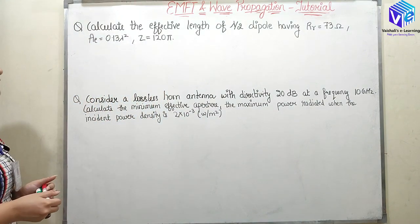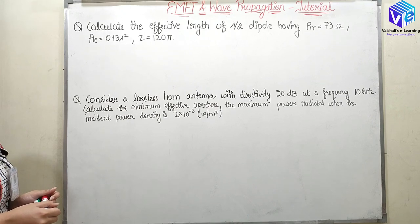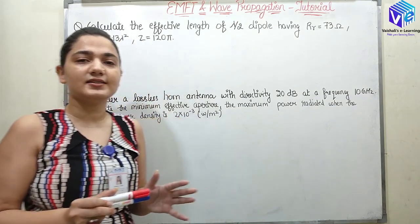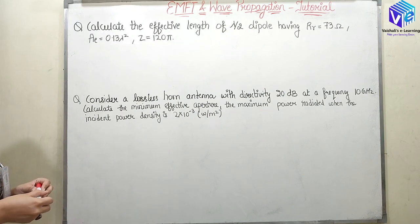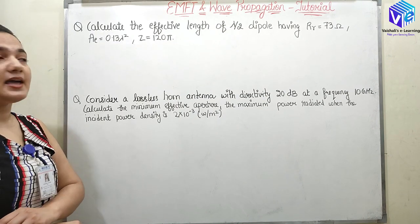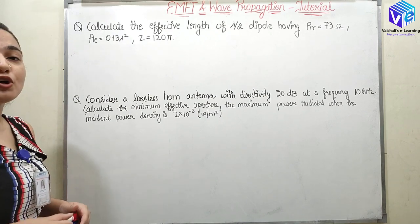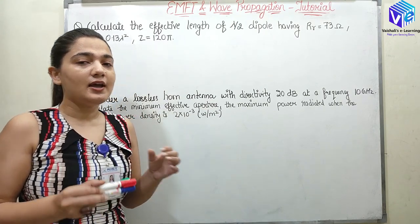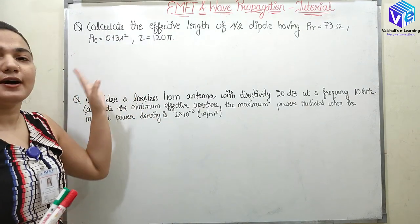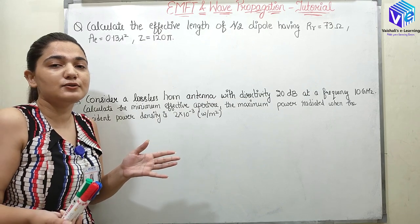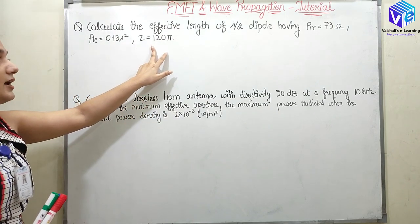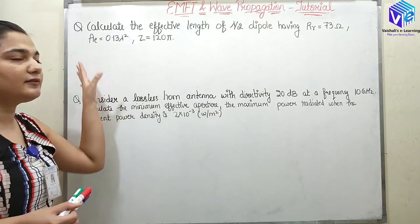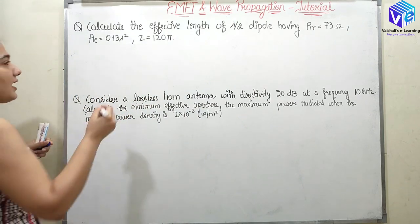If you have already watched them, you can start with the first question. It states: calculate the effective length of a lambda/2 dipole having Rr equal to 73 ohm. Rr represents the radiation resistance of the given antenna. Ae is equal to 0.13 lambda squared, where Ae is the effective aperture area. Lambda can be found with the help of the frequency on which the antenna is operating, but we don't know that frequency. Z is also given as 120π. We need to find the effective length.